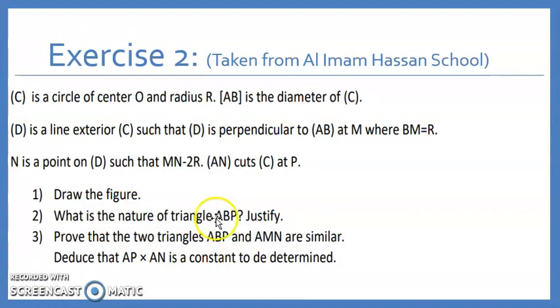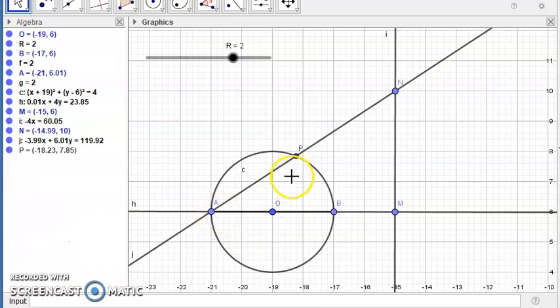Now what's the nature of triangle ABP? So this is the triangle ABP. Let's join the triangle first. This one is very easy and it's very common. So APB, the measure of the angle APB is equal to 90 degrees since it's an angle facing the diameter. So APB is a right triangle at P.